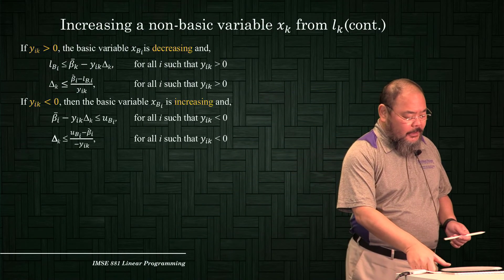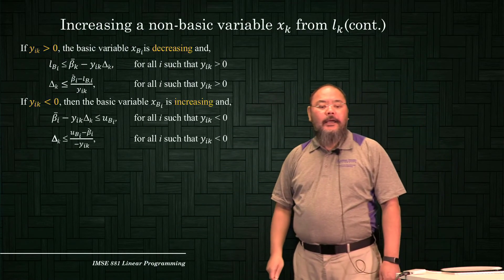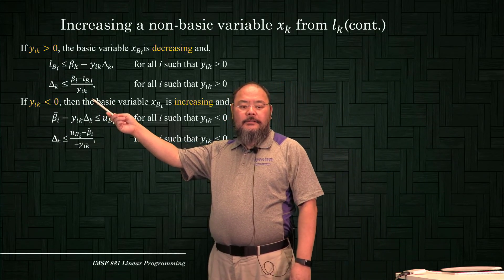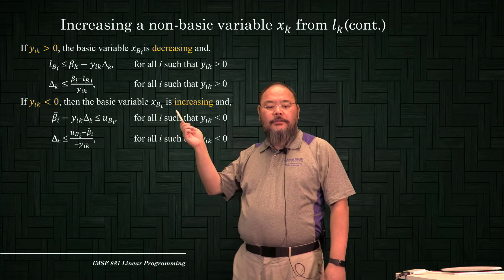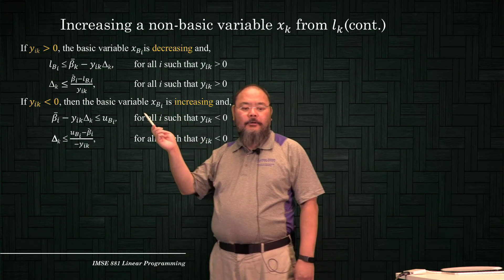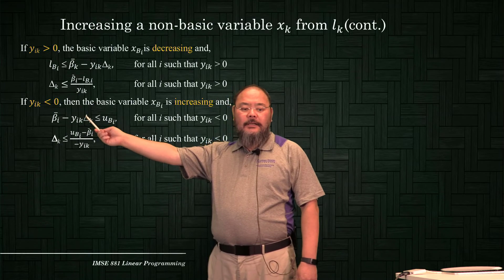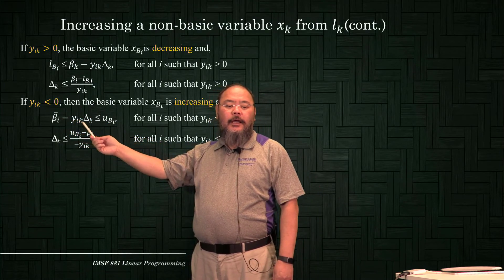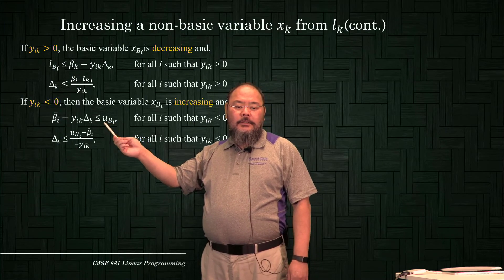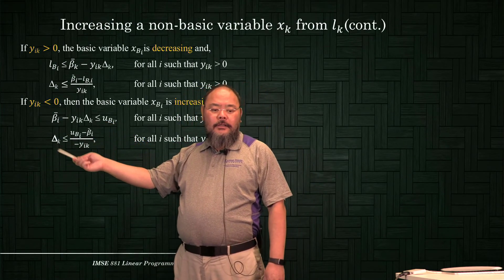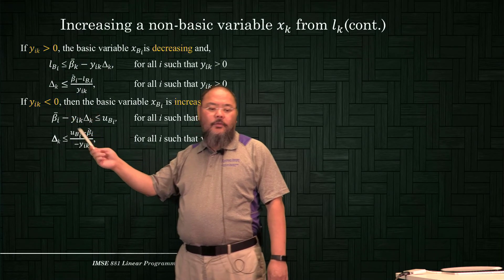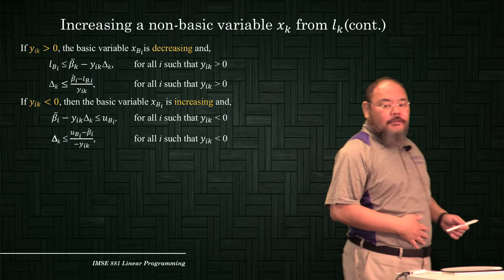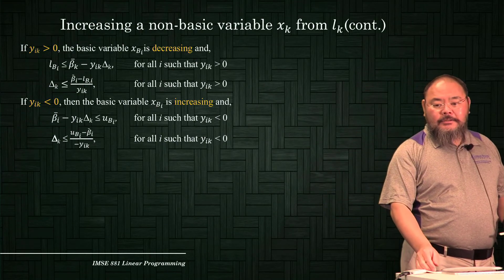On the other hand, if yi_k is negative, then as xk increases, xbi is also going to increase. The maximum this basic variable xbi can increase is to its upper bound. So therefore delta_k can only be so big — until one of the basic variables reaches the upper bound, and it has to stop to maintain feasibility.